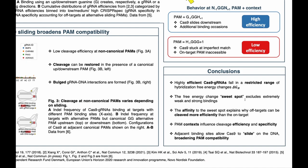In conclusion, we have shown that highly efficient guide RNAs fall in a restricted range of hybridization free energy changes, excluding extremely weak and extremely strong guide RNA–DNA bindings. We define this restricted range as a sweet spot and show that affinity to this sweet spot can explain why off-targets can be cleaved more efficiently than on-targets. We also showed how PAM contacts and adjacent nucleotides influence cleavage efficiency and specificity, and that binding sites adjacent to a target allow Cas9 to slide on the DNA, broadening its PAM compatibility.